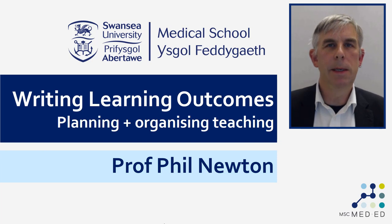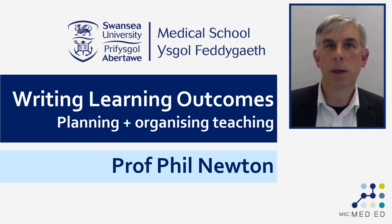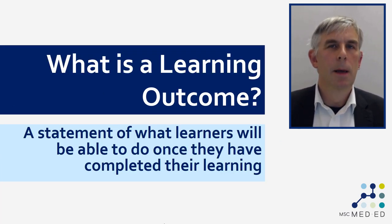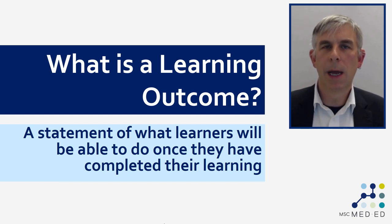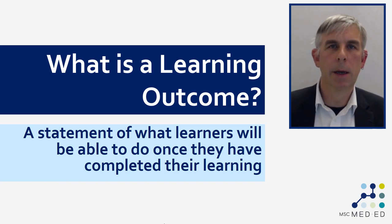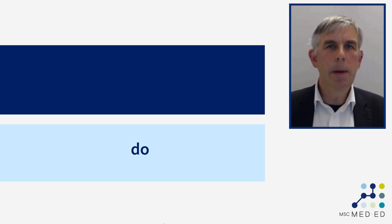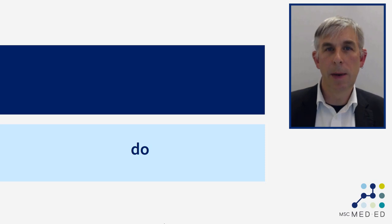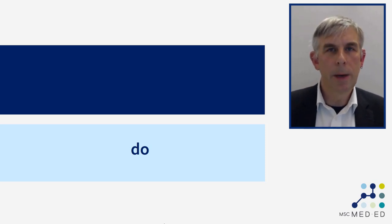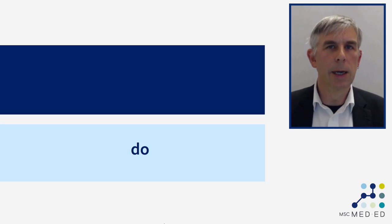The best place to start is probably by defining what a learning outcome is. It's a simple statement of what learners will be able to do once they have completed their learning. If you keep in mind what it is that you want learners to be able to do by the end of their learning, then you're going to be in good shape when you're planning any learning and teaching activity.